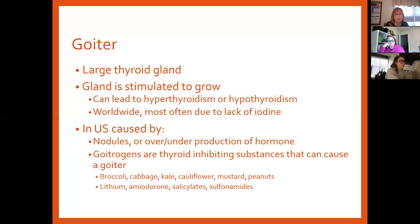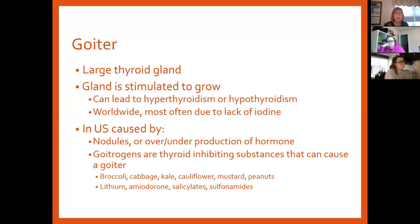A goiter is a big, enlarged gland stimulated to grow. It can lead to hyperthyroidism because it's over-stimulated, or it can be growing bigger and bigger with nothing left to give — so you can be hypothyroid. A goiter itself does not tell you whether you're hyper or hypo. Worldwide it's most commonly due to lack of iodine in the diet, but that's not the problem here in the United States because we have iodized salt, cereals, packaged foods. In the U.S. our problem is nodules that can overproduce or underproduce.